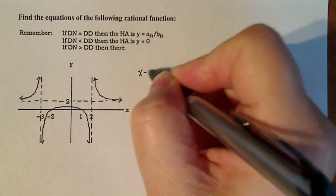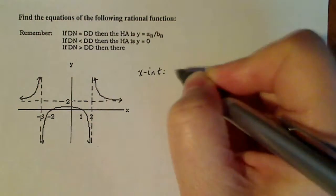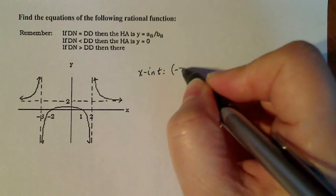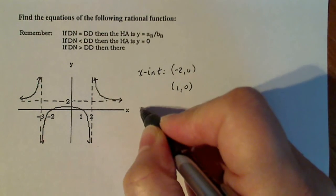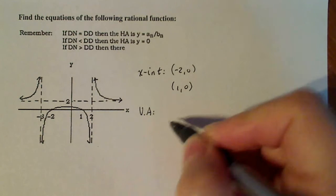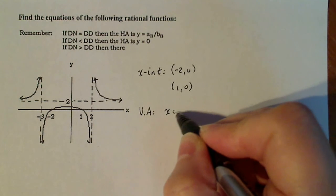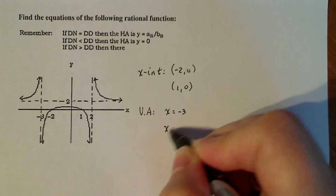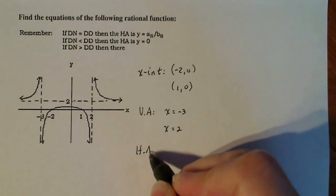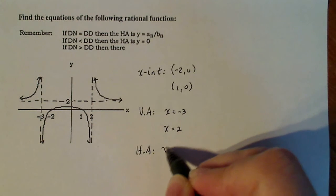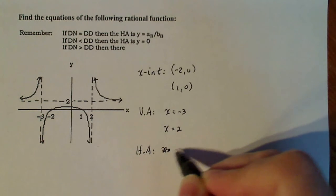Right now I know I have x-intercepts at the following ordered pairs: negative two, zero and one, zero. I have vertical asymptotes at the lines x equals minus three and x equals two. And then I have a horizontal asymptote at x equal—oh sorry, not x—y equals two.